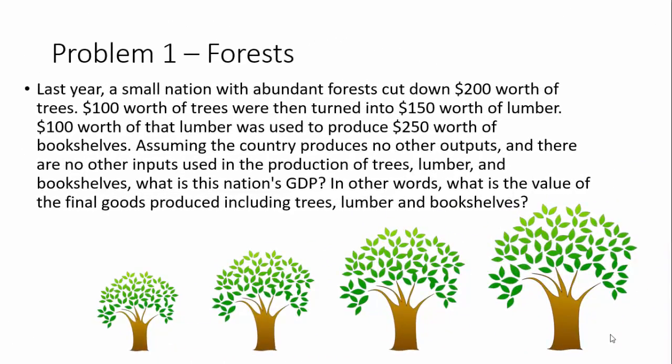Problem number one: forests. Last year, a small nation with abundant forests cut down $200 worth of trees. $100 of these trees were then turned into $150 worth of lumber. $100 worth of the lumber was then used to produce $250 worth of bookshelves. Assuming the country produces no other outputs and there are no other inputs used in the production of trees, lumber, and bookshelves, what is the nation's GDP? In other words, what is the value of the final goods produced?